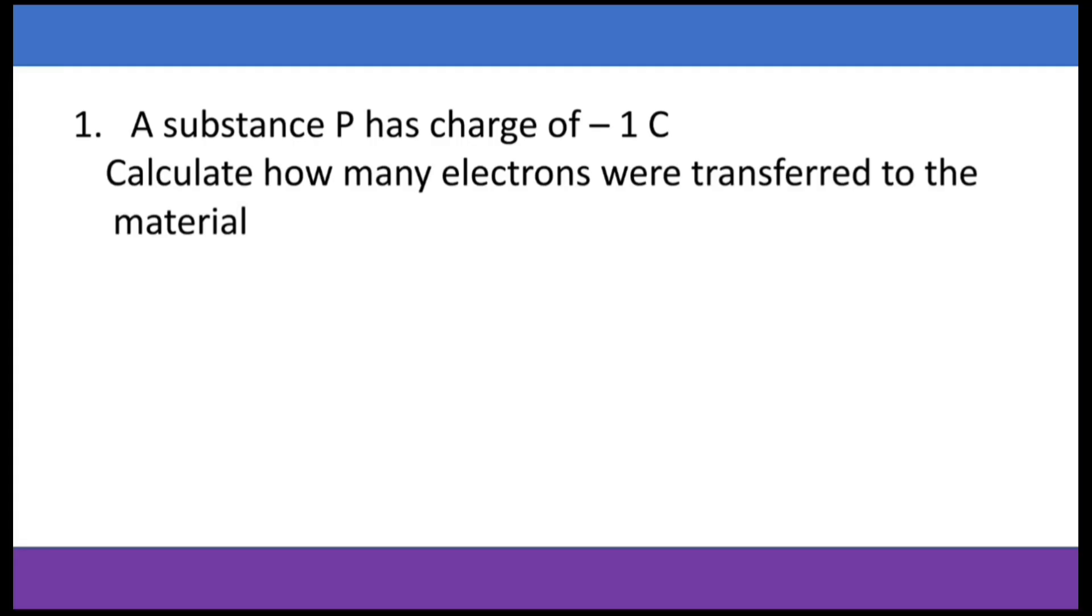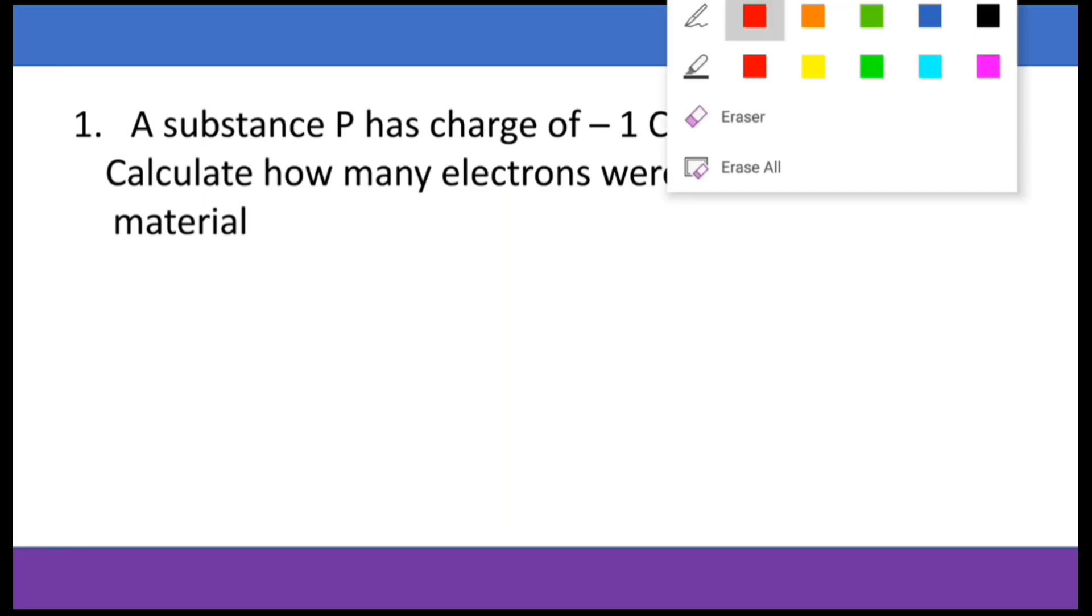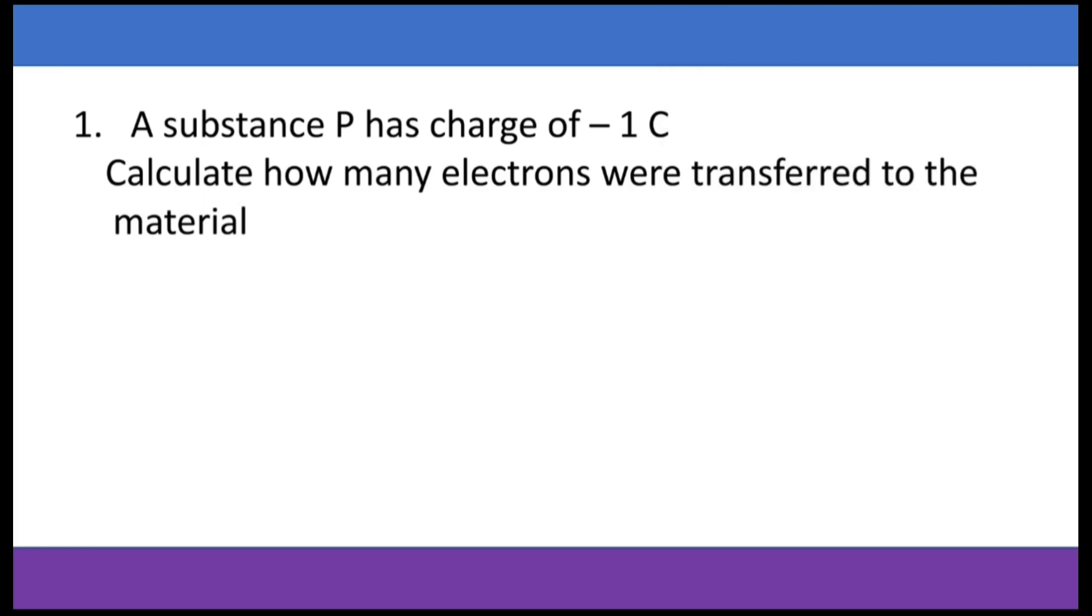In this example, we have a material that has got a charge of negative one coulomb. We want to know how many electrons are transferred to the material. We know that electrons are transferred to the material because it's got a charge of minus. Remember, we said minus means excess. So using the formula Q is equal to n times e.